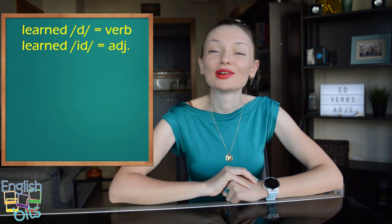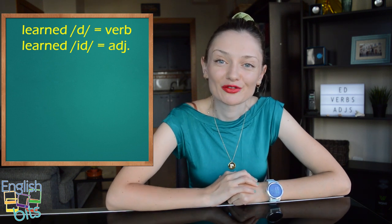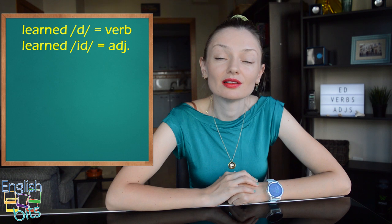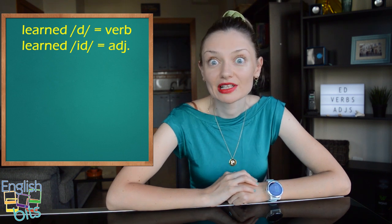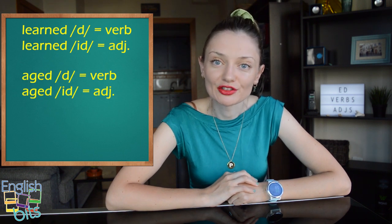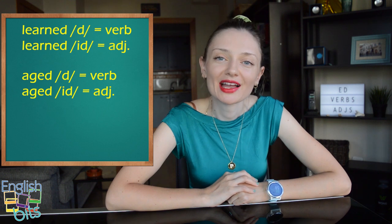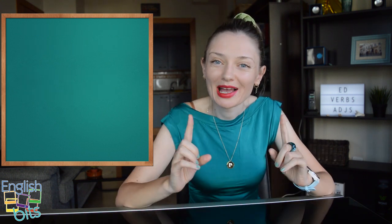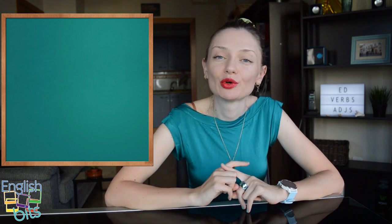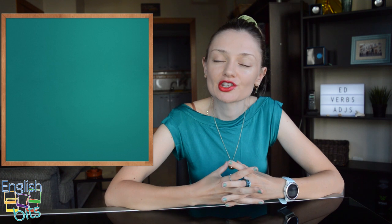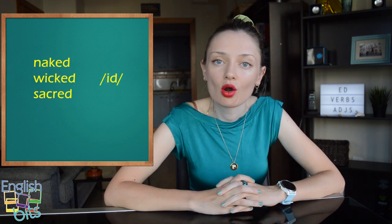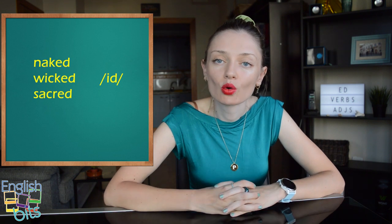The same happens with learned — if it's a verb it would be learned, and if it's an adjective, learned. And another example: aged — if it's a verb, aged; and if it's an adjective, it would be with ED: aged. Also, it's important to point out that if there is no corresponding verb, the pronunciation is always ED. For example: naked, wicked, or sacred.